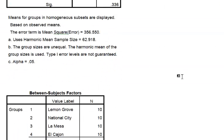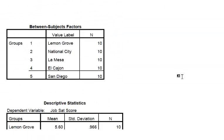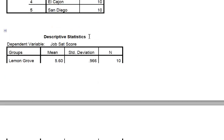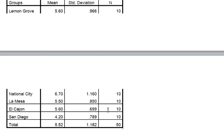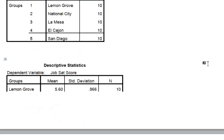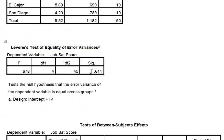So now let's look at the next one — the hamburger guy. This box is good — it tells us how many are in each group and your mean scores. You need that for your APA write-up. And your Levene's test shows you did not violate the assumption of homogeneity of variance. In other words, the variance is relatively the same between the five stores.